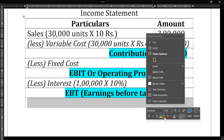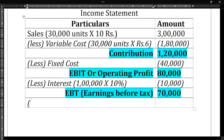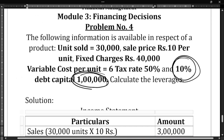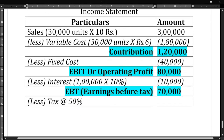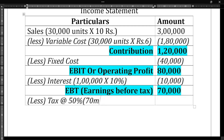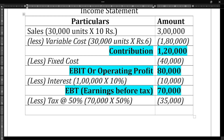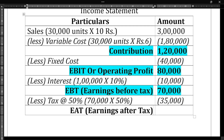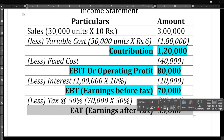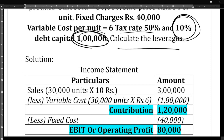From EBT of ₹70,000 we deduct tax at 50%, which is ₹35,000. So earnings after tax is ₹70,000 − ₹35,000 = ₹35,000. Only information up to the tax rate is given, so we cannot solve further beyond this.